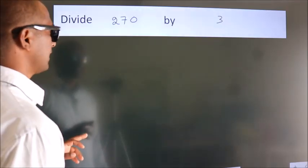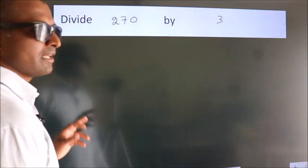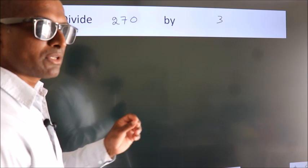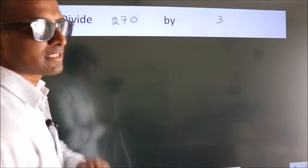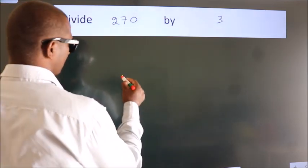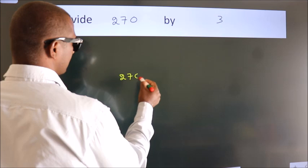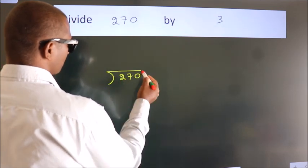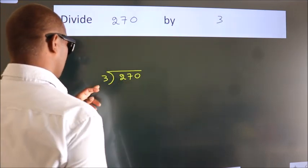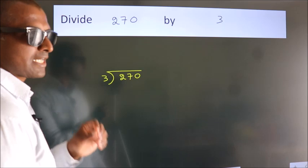Divide 270 by 3. To do this division, we should frame it in this way. 270 here, 3 here. This is your step 1.